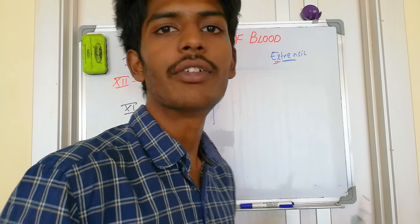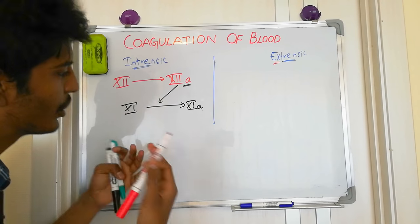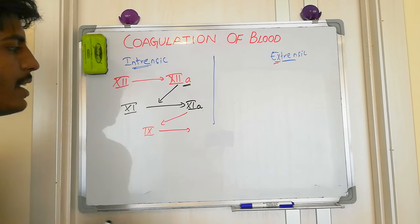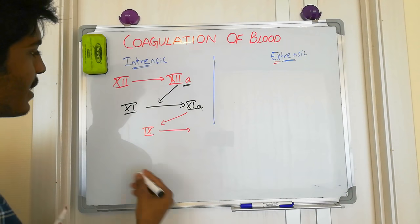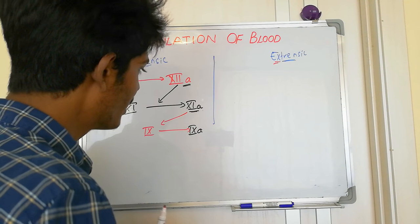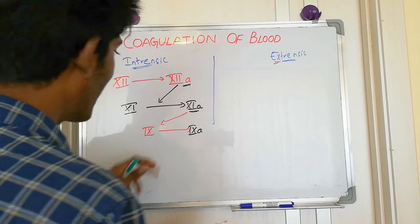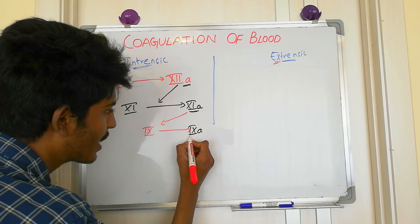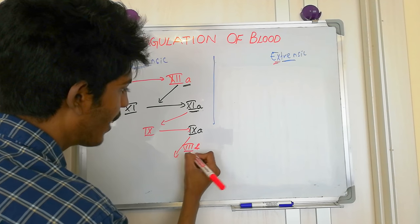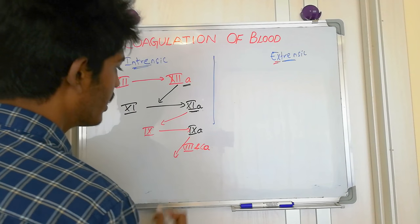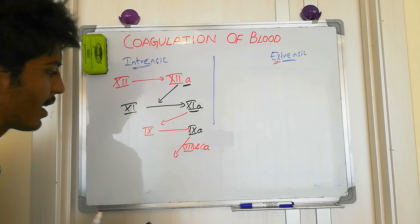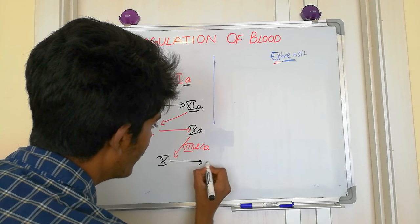Factor 11 is plasma thromboplastin. The activated plasma thromboplastin activates factor 9, which is Christmas factor. Christmas factor becomes activated (9a). This activated Christmas factor, with the help of anti-hemophilic factor (factor 8) and calcium (factor 4), then activates factor 10.